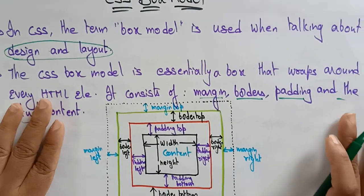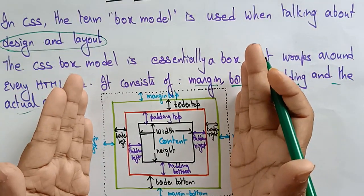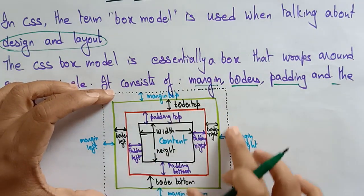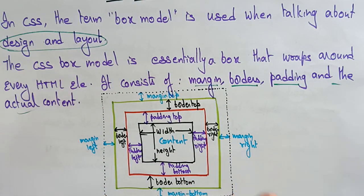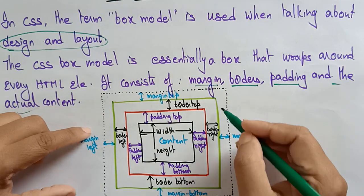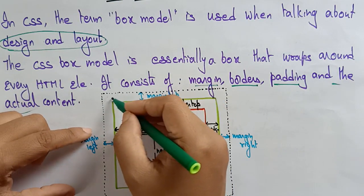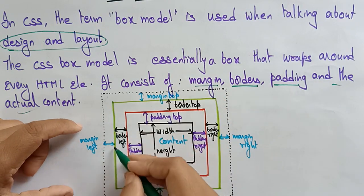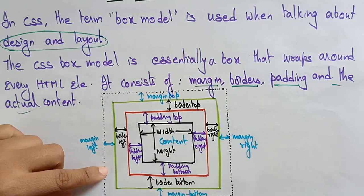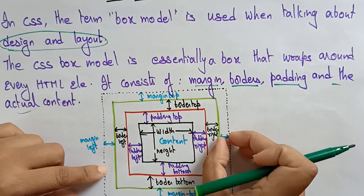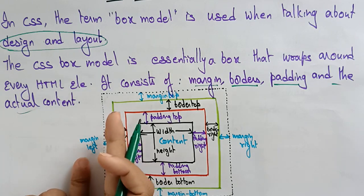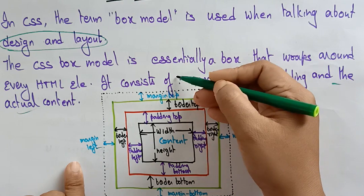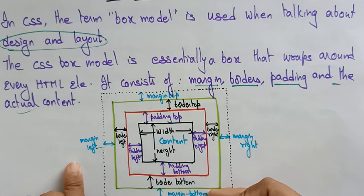See here, this is a diagram. Let us take this as a web page. The complete web page will be divided into these types — with margins, borders, paddings, and contents. The outer one is called the margin. This margin is the transparent one — it gives a space. If you want space from the left side: left margin. Right side: right margin. Top margin. Bottom margin.